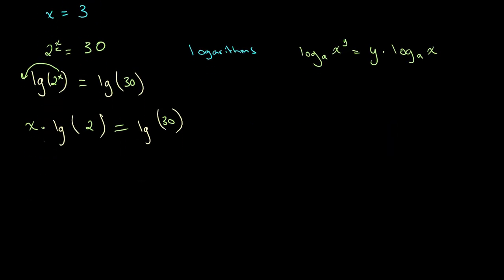So we want to get x alone, and to do that we divide both sides by lg of 2. So we get x is equal to lg of 30 divided by lg of 2. And now all we need to do is just plug this into our calculator because we're allowed to just plug in lg of a number into our calculator.